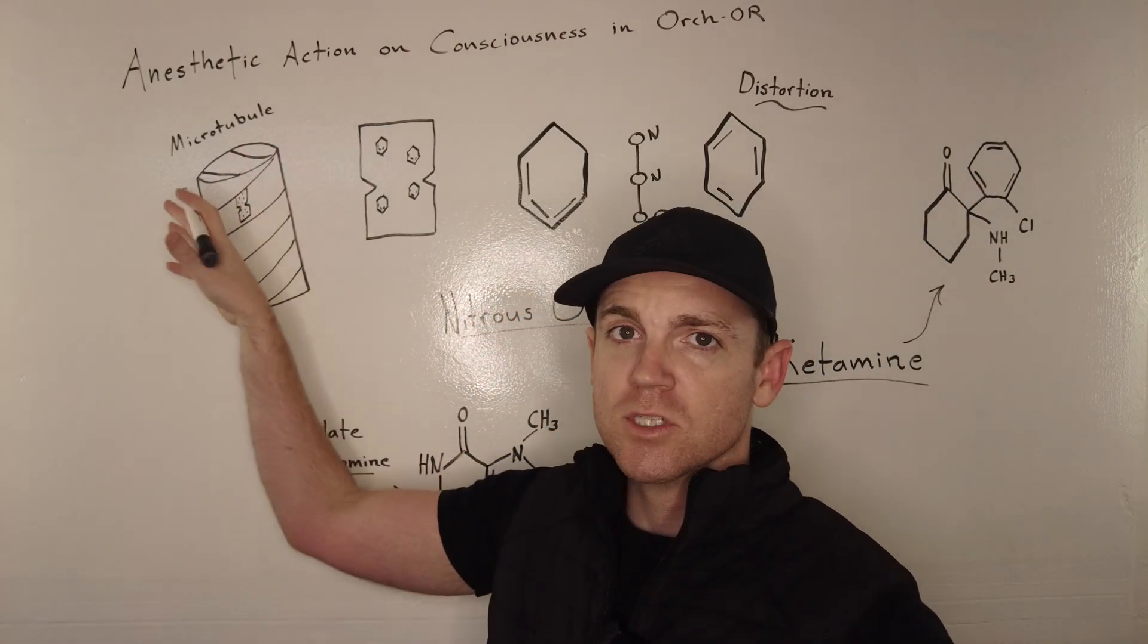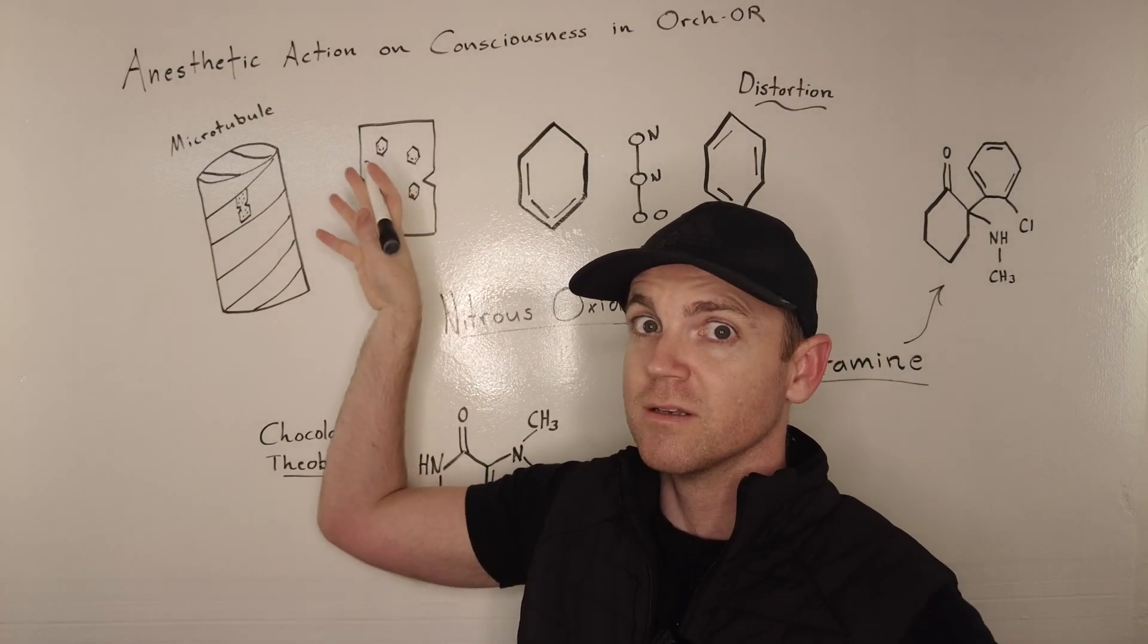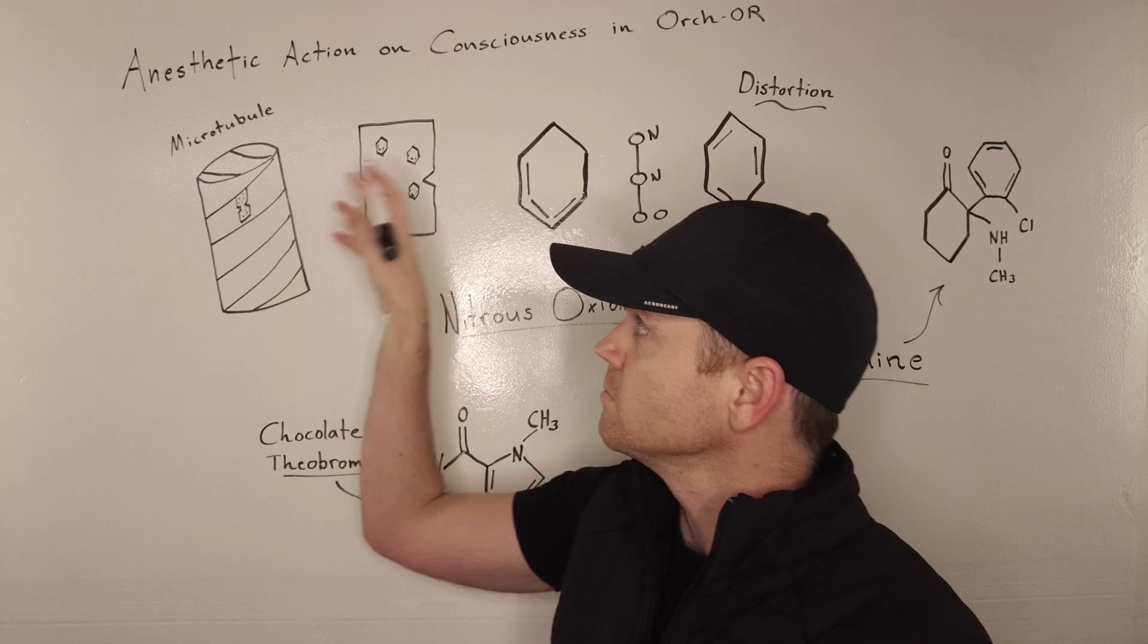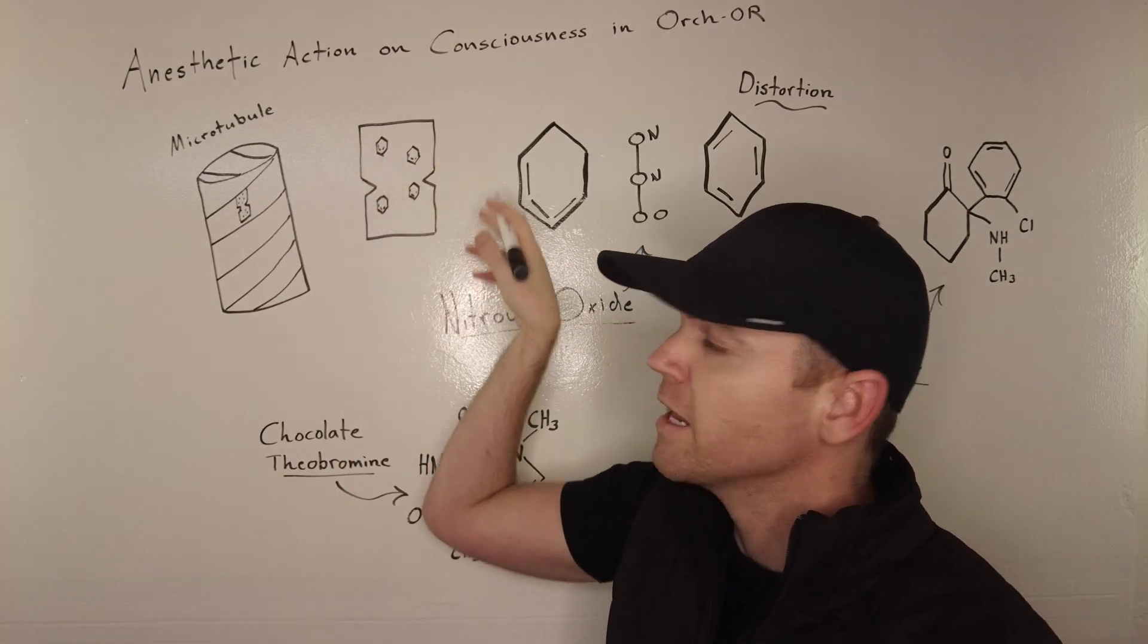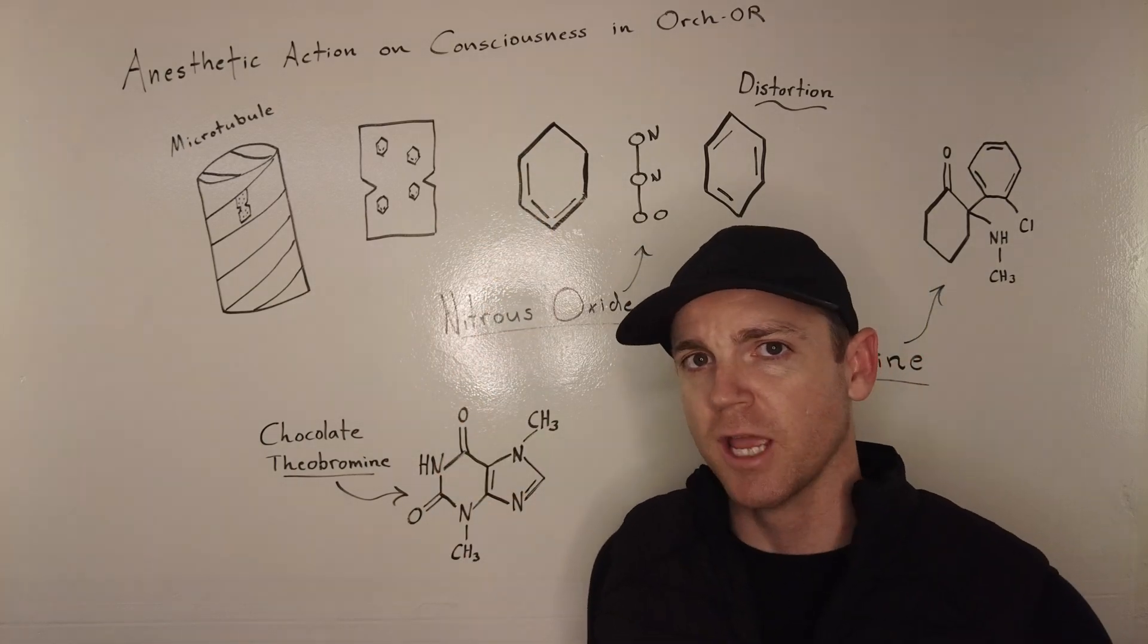So inside of the microtubules, you have a dipole, sorry, a tubulin dimer right here. And inside of the tubulin dimer, you have benzene rings represented as a hexagonal shape.